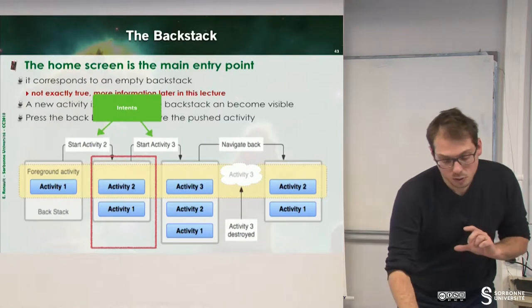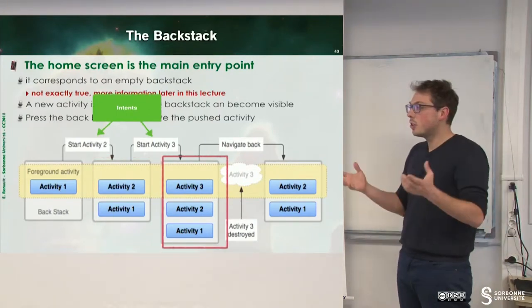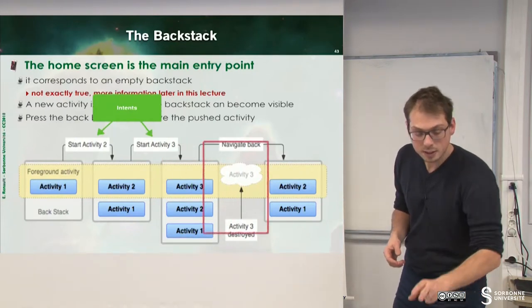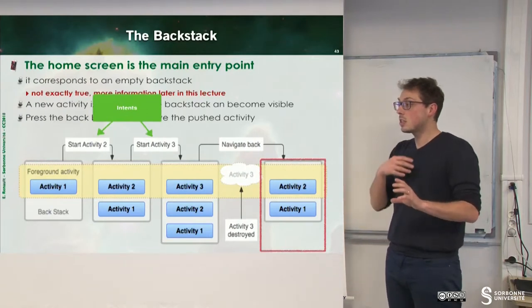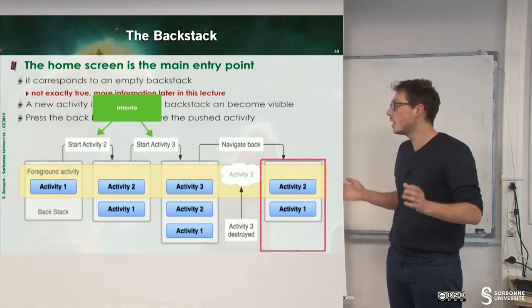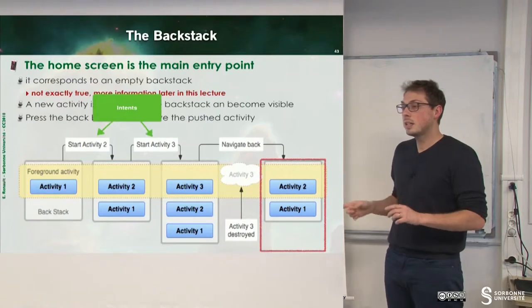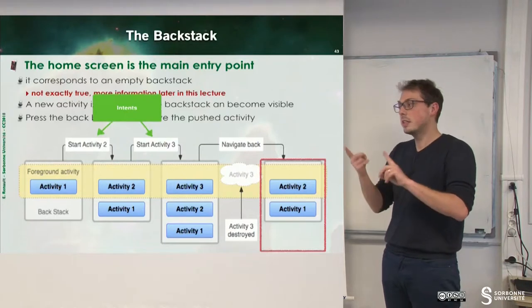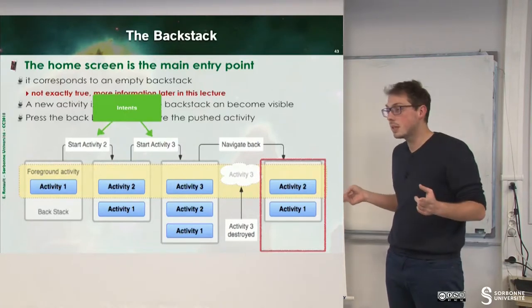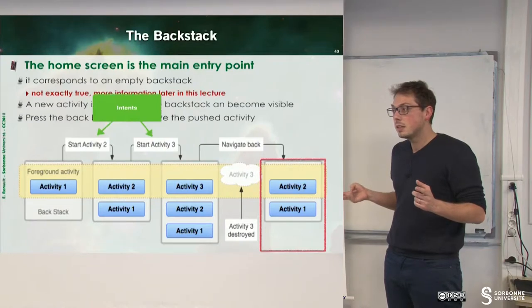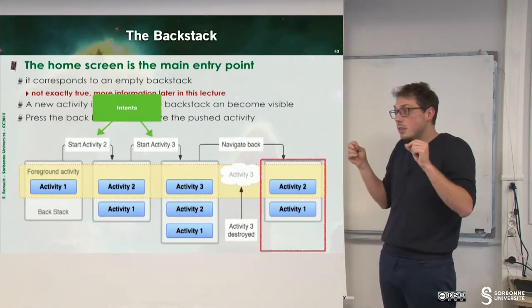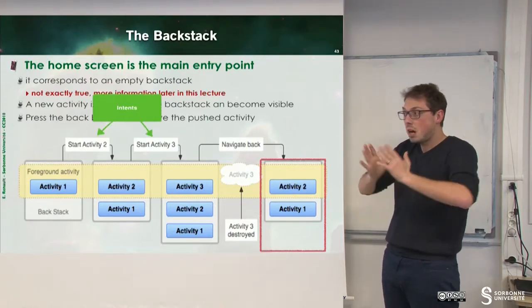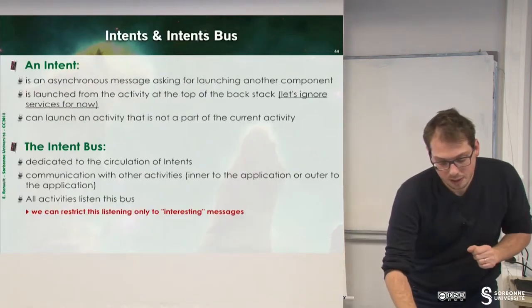The screen displays only the user interface for the activity on the top of the backstack. Now activity two wants to start activity three. Now the activity three is visible for the user. And then the activity three is cancelled or killed or something. And we found our backstack as previously. Two notions, the intent and the backstack. We cannot have an empty backstack.